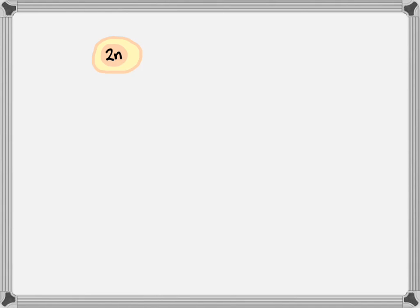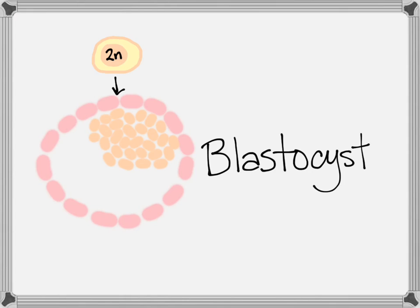It'll start out as a cluster of cells, and then eventually become a more structured cluster of cells within an outer layer of cells called a blastocyst.